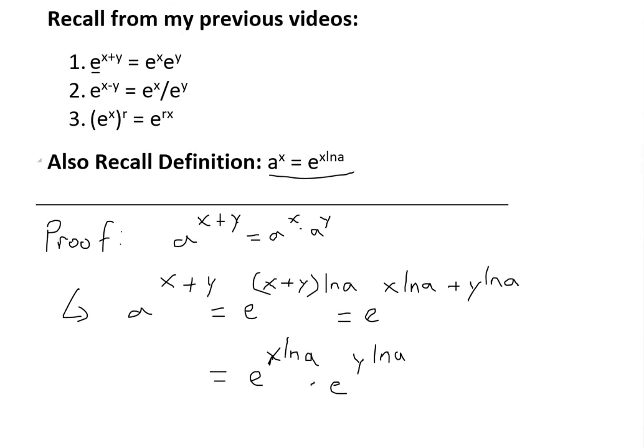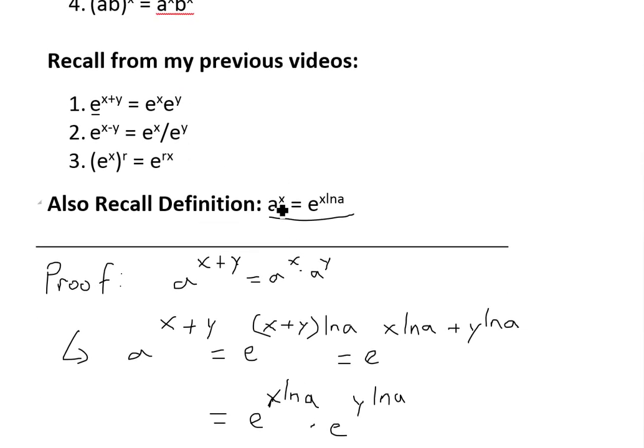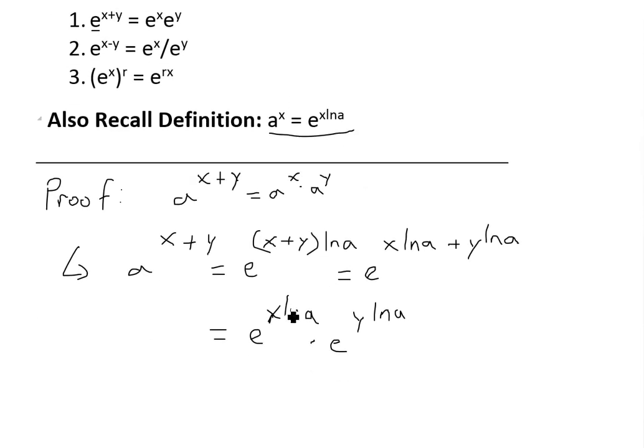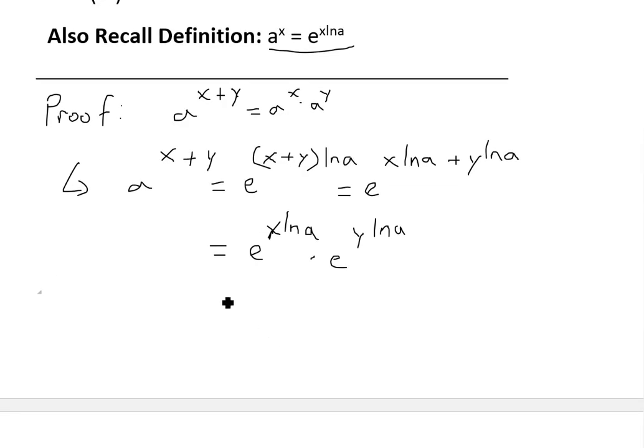Now we could use the definition again. So a^x equals e^(x ln a), and this is e^(x ln a), so then this equals a^x. This is e^(y ln a), so that's going to be equal to a^y right here.